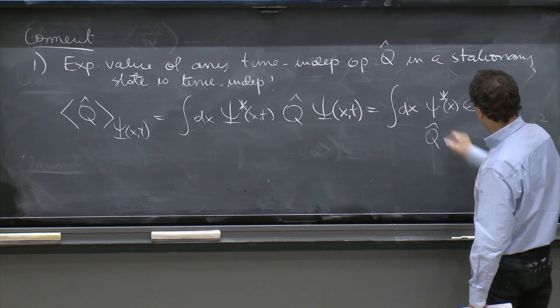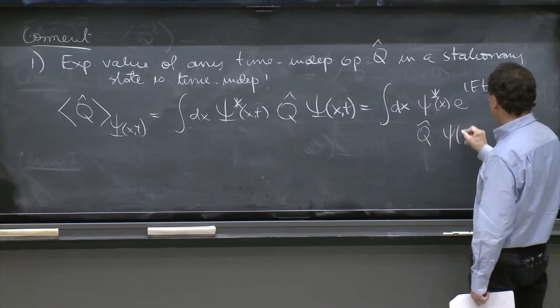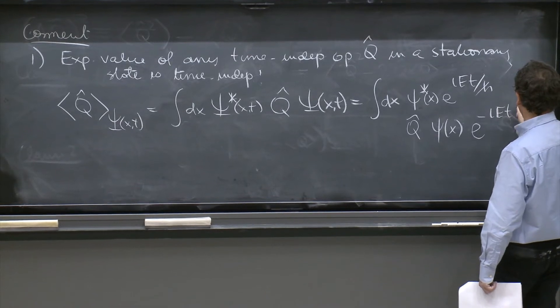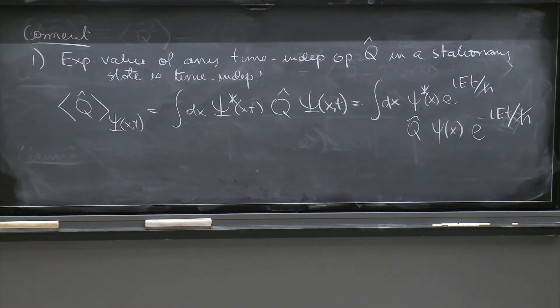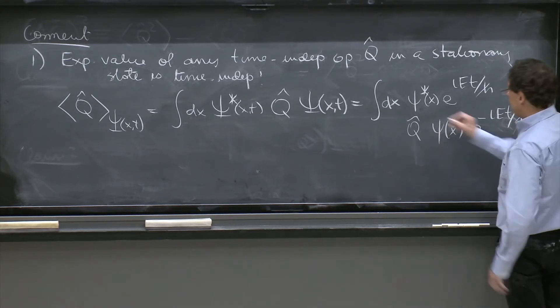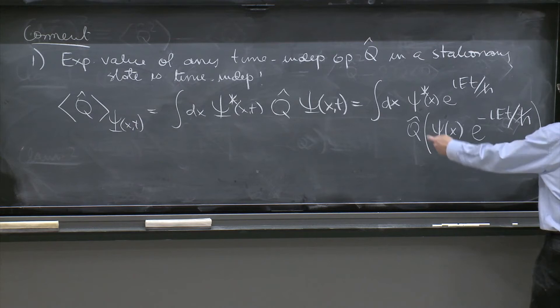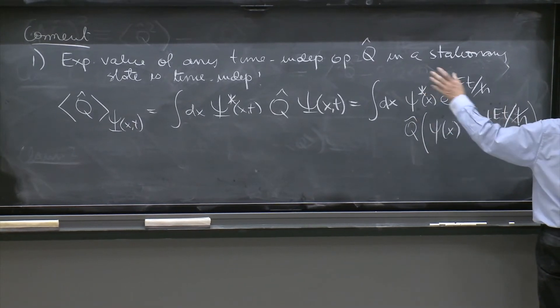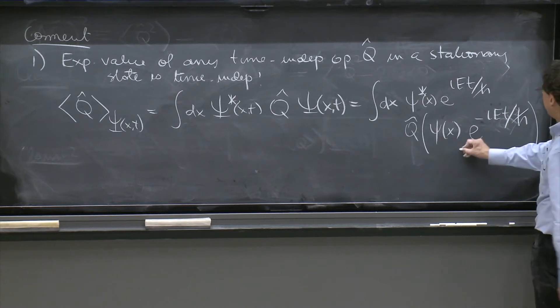Little psi star of x e to the i E t over h bar, and I'll put the whole thing here: Q hat psi of x e to the minus i E t over h bar. So it's the same thing. Q doesn't care about time. So this factor just moves across and cancels this factor.